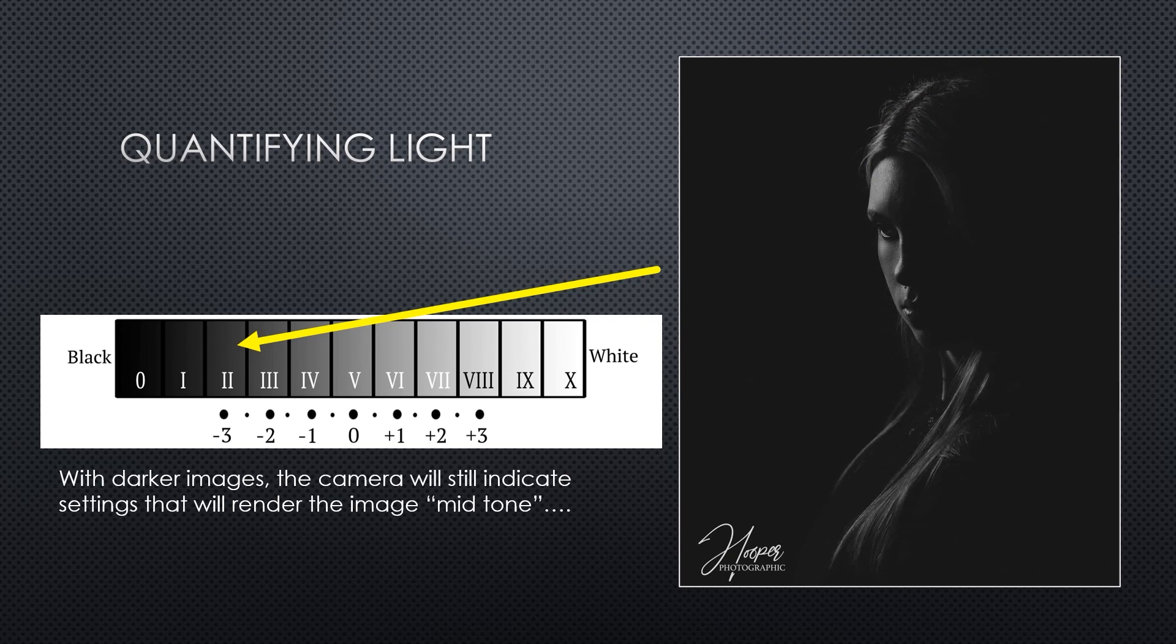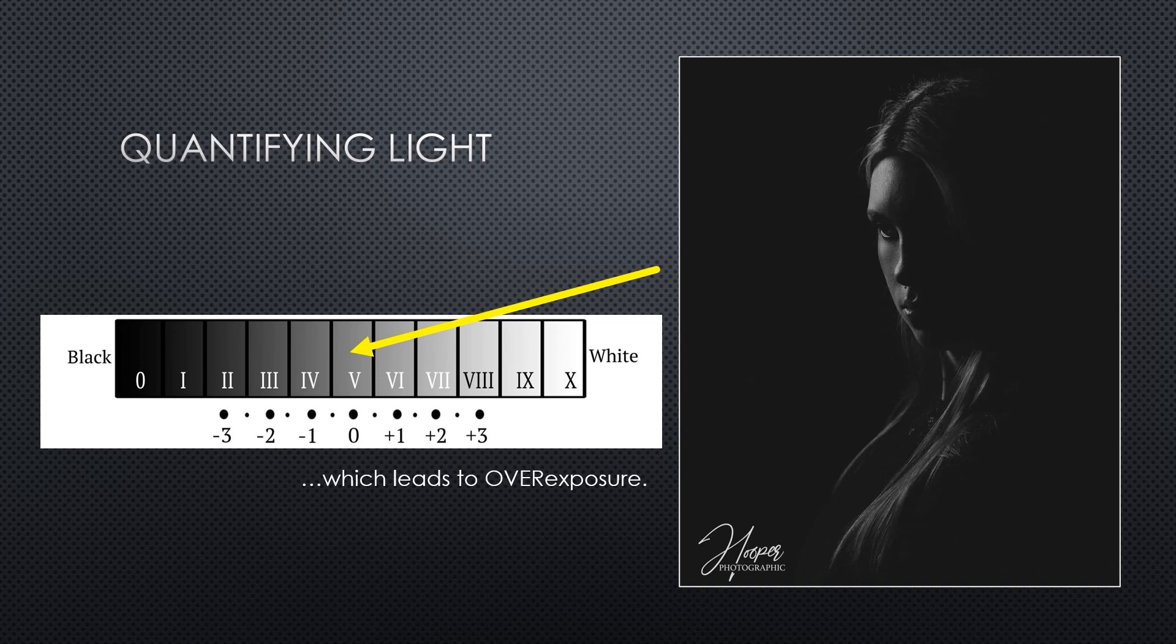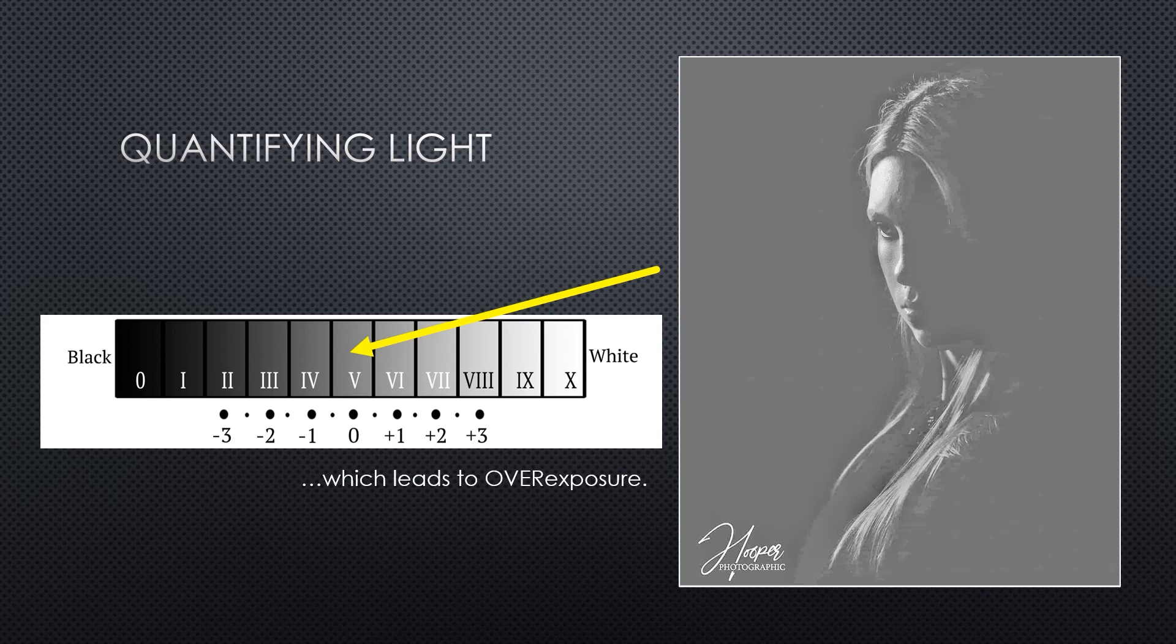The issue that we run into is when our images are not average toned. This image, for example, is a much darker image. If we were to blend all of the tones together, the lights and the darks together, it would average out to about a Zone 2, which is three stops darker than the Zone 5. If we allow the camera to record the image without any sort of adjustments, it will suggest for us an image that is up to Zone 5. It will give us a set of shutter speed and aperture that will yield for us an image that is about a Zone 5. And what that will do is ultimately lead to an overexposed image.